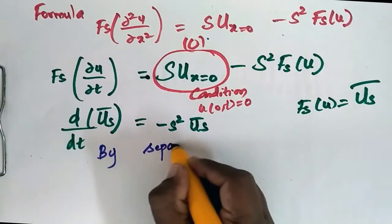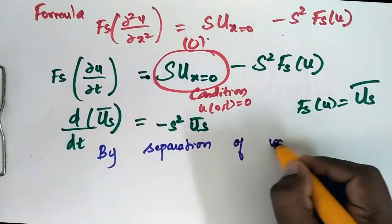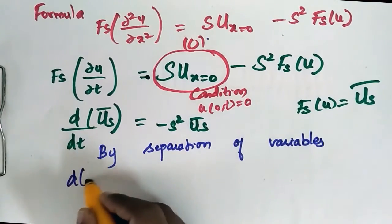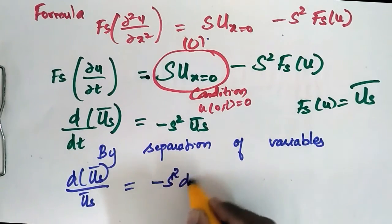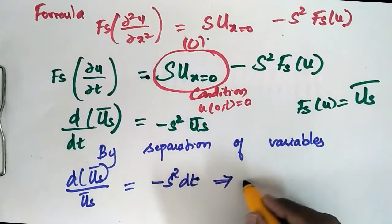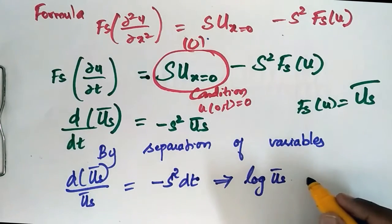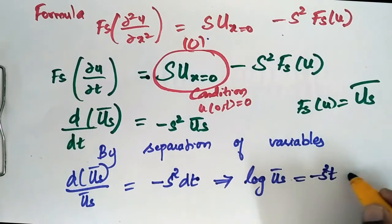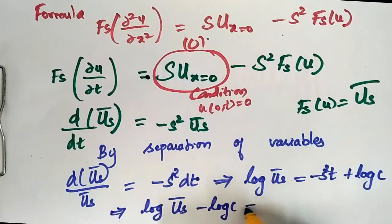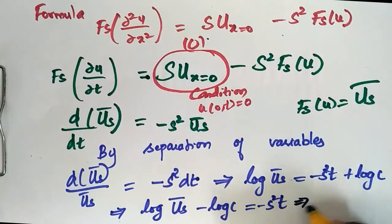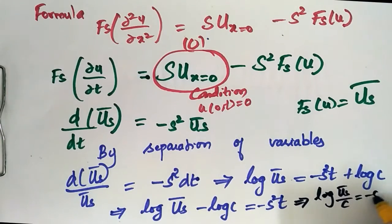By separation of variables: d(ū_s) / ū_s = −s² dt. Integrating both sides, we get log ū_s = −s² t + log C, which rearranges to log(ū_s / C) = −s² t.